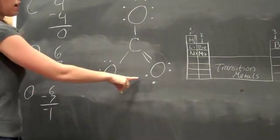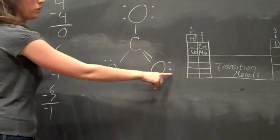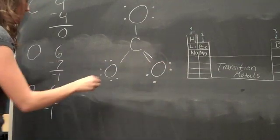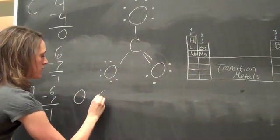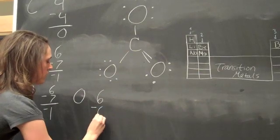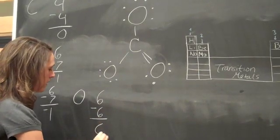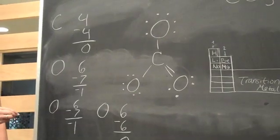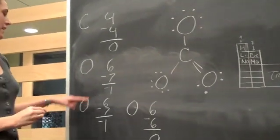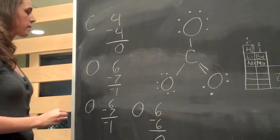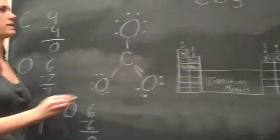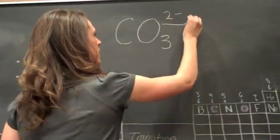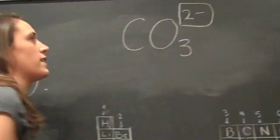And then for this oxygen, you have two, four, five, six. So we still have the same six valence electrons minus six and zero. So for this one, we can see that the formal charge is not zero the way it was last time. It's actually negative two. And that coincides with the negative two charge for this ion.